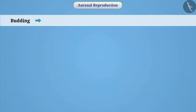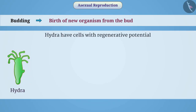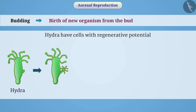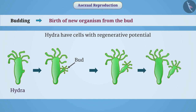Budding. Some organisms such as hydra have cells with regenerative potential. When the hydra is fully grown, the regenerative cells divide by creating a bulge — a bud — on the body wall. This bud develops into a small hydra, and upon sufficient growth, these organisms separate from the parent hydra and become independent organisms.